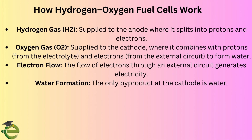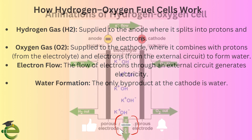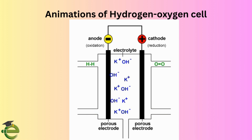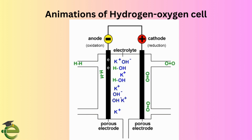In this cell, hydrogen gas is used as the fuel. It enters the cell at the anode, where each hydrogen molecule splits into hydrogen ions and electrons. These electrons flow through the external circuit, generating electricity. At the cathode, oxygen gas enters and gains the electrons released by the hydrogen. Hydrogen ions, oxygen gas, and electrons then combine to form water.